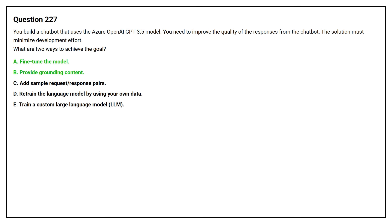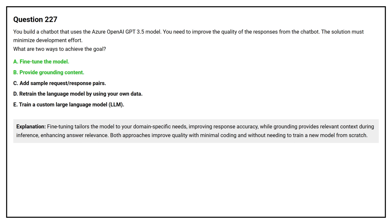The correct answers are Option A, fine-tune the model, and Option B, provide grounding content. Fine-tuning tailors the model to your domain-specific needs, improving response accuracy, while grounding provides relevant context during inference, enhancing answer relevance. Both approaches improve quality with minimal coding and without needing to train a new model from scratch.